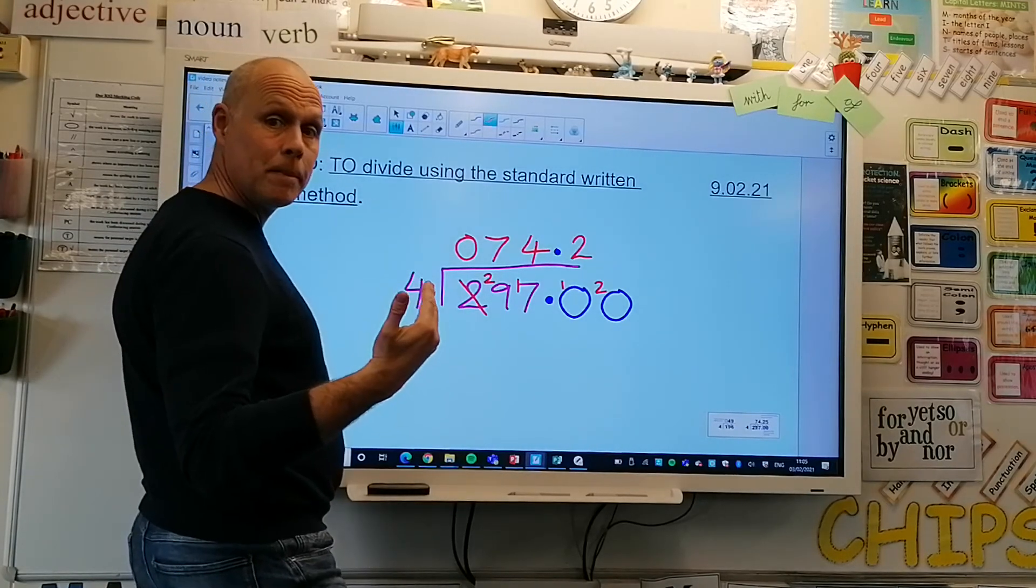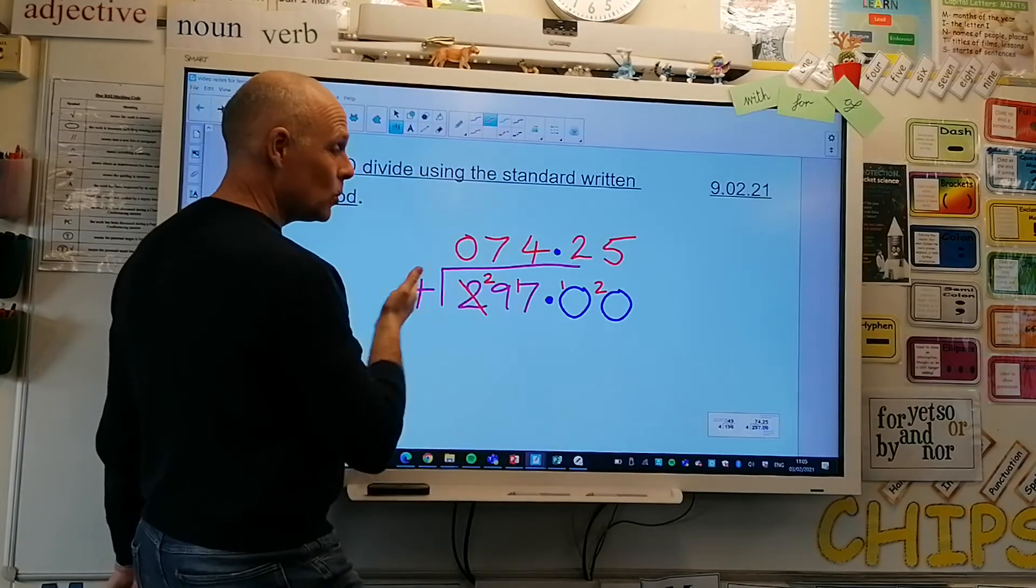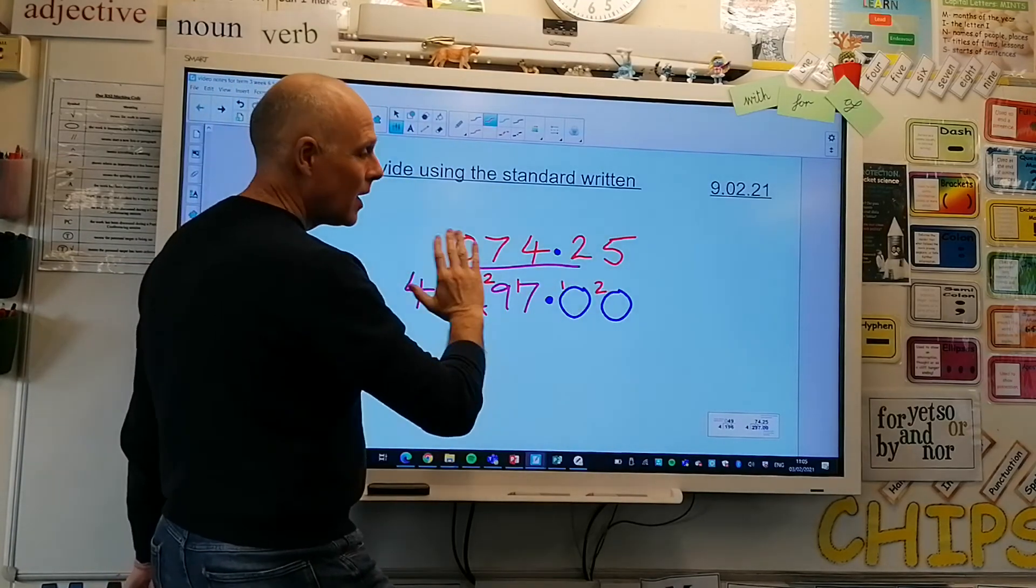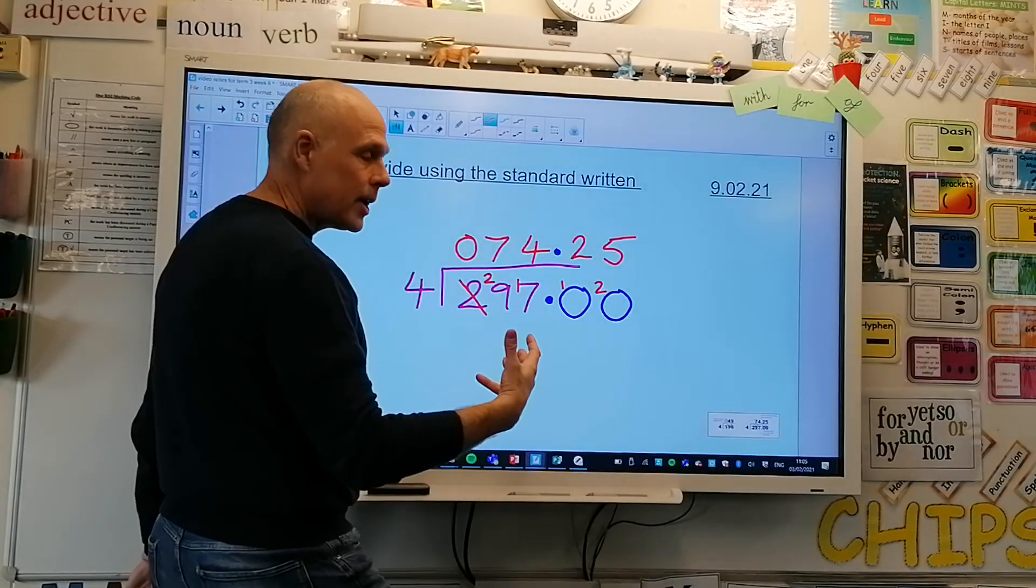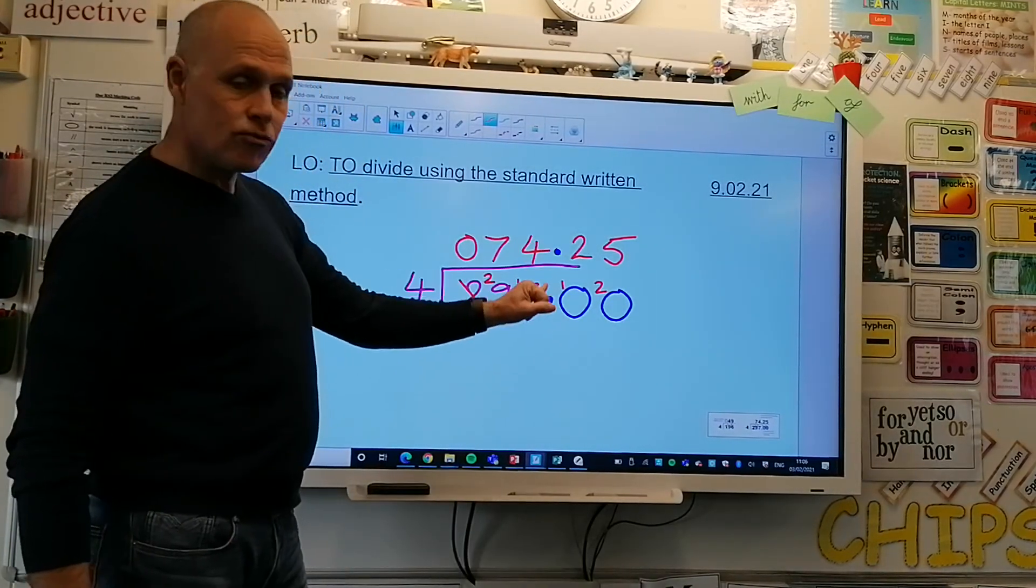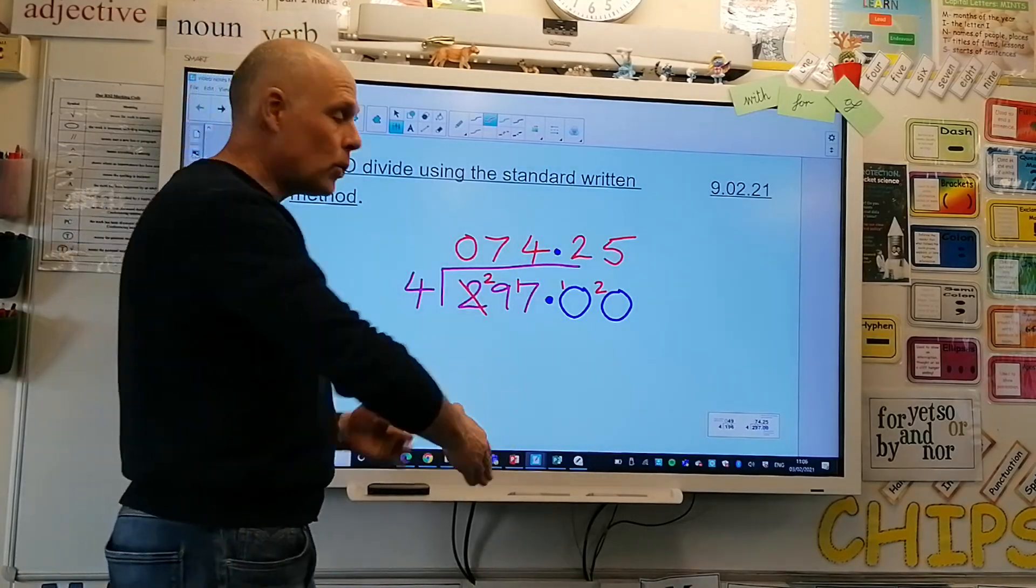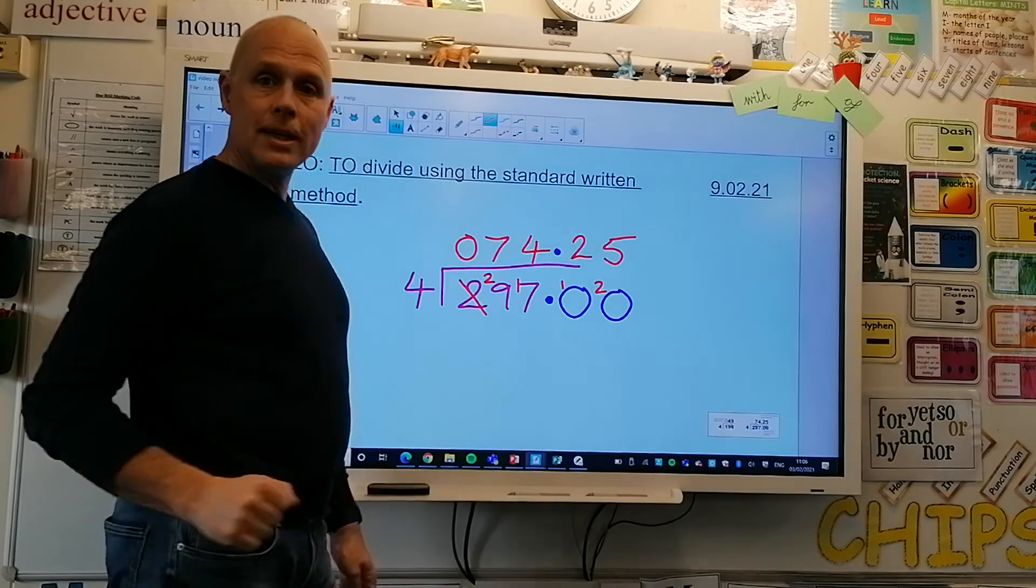Four fours are 16, so we can get another one now, can't we? So 5, 5 fours are 20, nothing left to exchange. Perfect. Check decimal point is right above, just like addition and subtraction, that decimal point is right above the other decimal points. Multiplication is the only one that's different and we'll deal with that later.